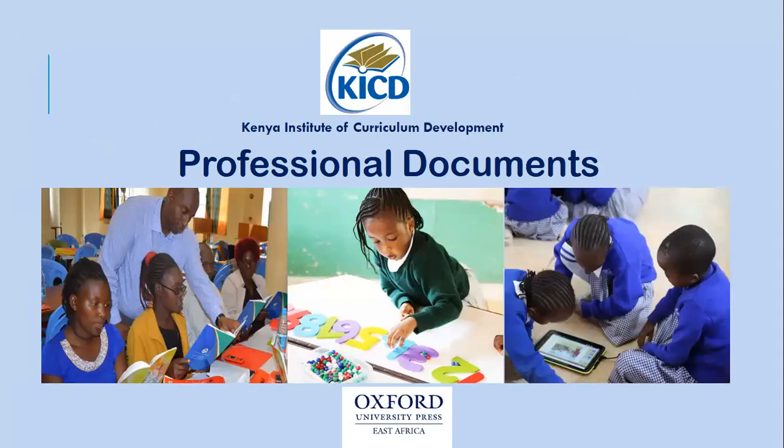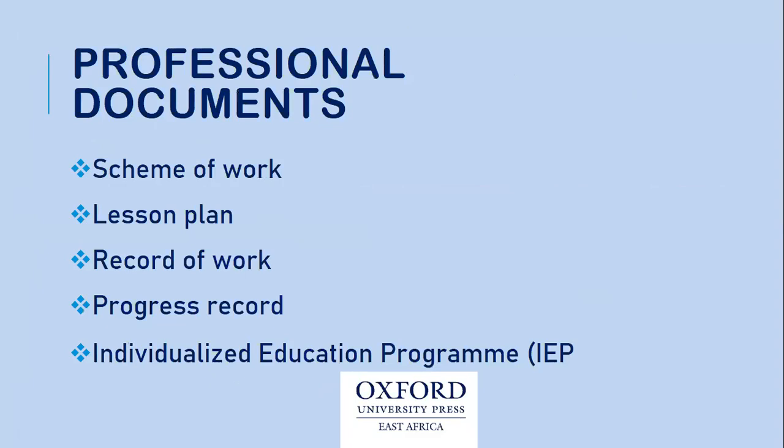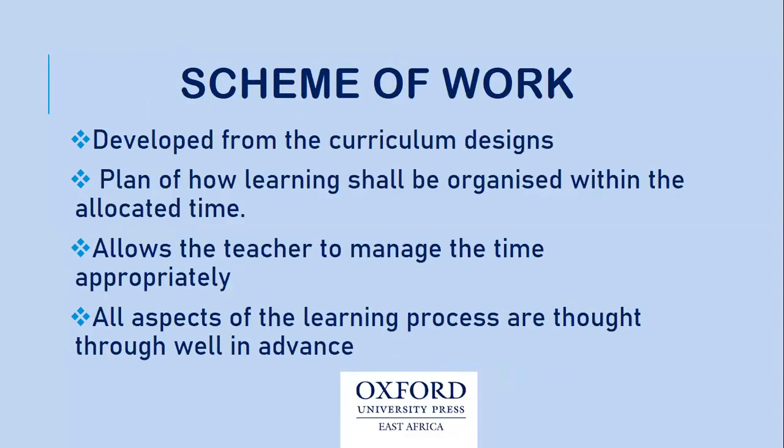The professional documents stated here are the scheme of work, lesson plan, record of work covered, progress record, and individualized education program. Because our time is very brief, this session needs to take around an hour. We are likely just to go through the first two, then the rest can just be posted to you. What is a scheme of work? It is always developed from the curriculum design, and it is a plan of how learning shall be organized within the allocated time frame.